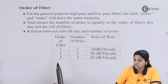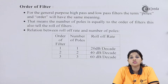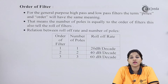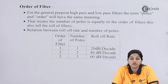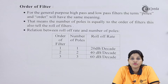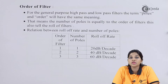A higher order filter provides greater attenuation of frequencies in the stop band. However, increasing the order also increases circuit complexity and makes the filter more expensive compared to a lower-order filter.